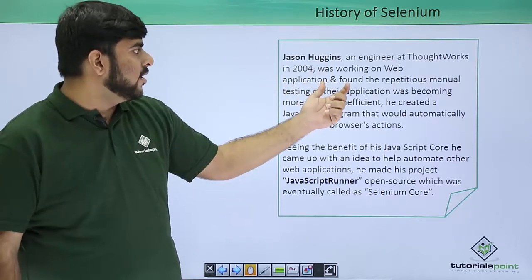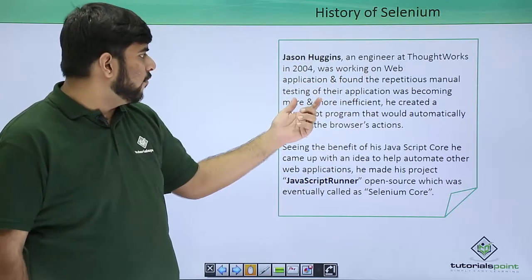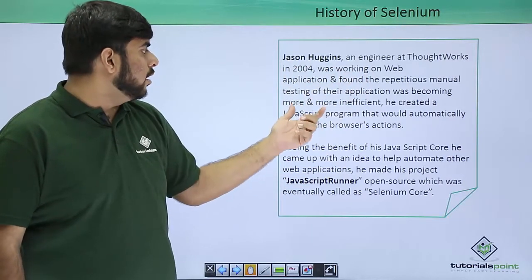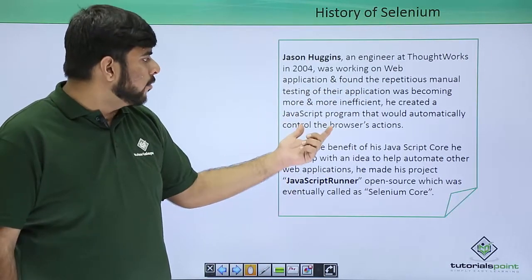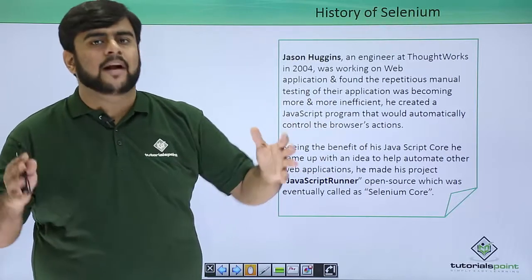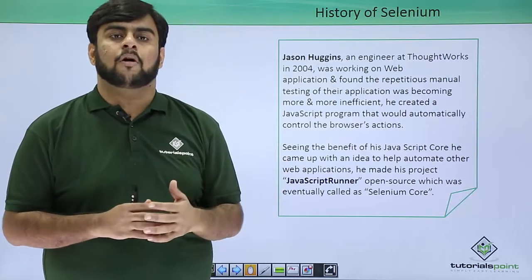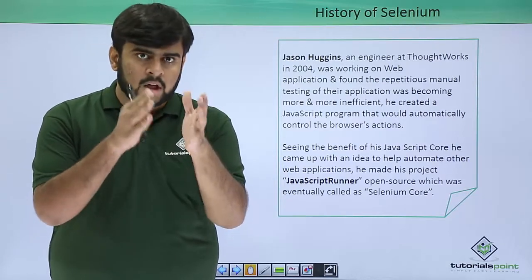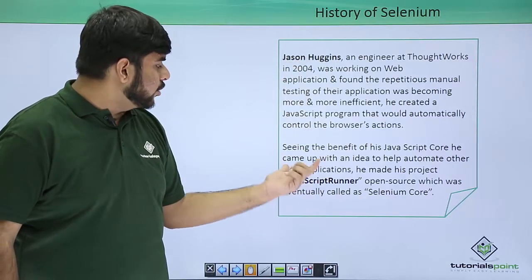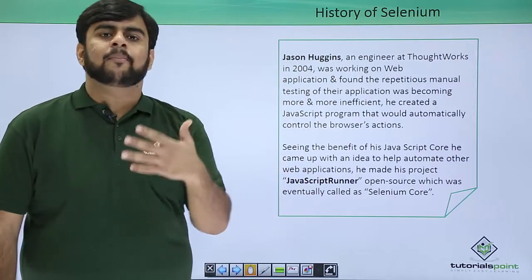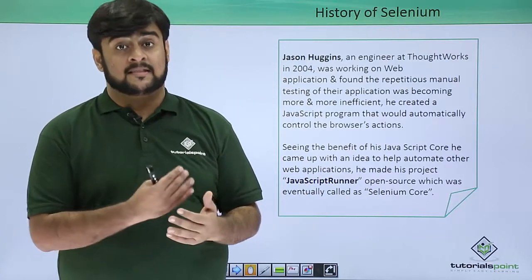Jason Huggins, an engineer at ThoughtWorks, was working on a web application and found repeated manual testing tasks very inefficient. So he created a JavaScript program that would automatically control the users' actions. That was the foundation of automation testing. This JavaScript Test Runner was made open source by Jason Huggins and is also known as Selenium Core.